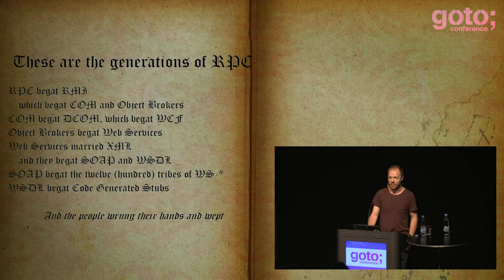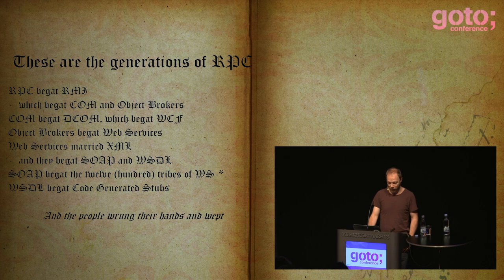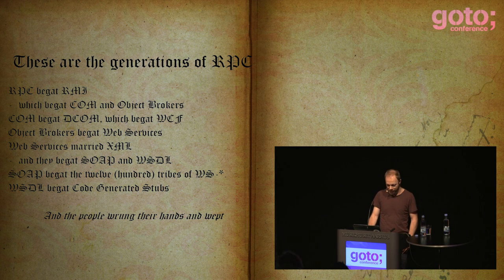These are the generations of RPC. RPC begat RMI, which begat COM and object brokers. COM begat DCOM, which begat WCF. Object brokers begat web services. Web services married XML, and they begat SOAP and WSDL. SOAP begat the 1,200 tribes of WS Death Star. WSDL begat code-generated stubs. And the people wrung their hands and wept.